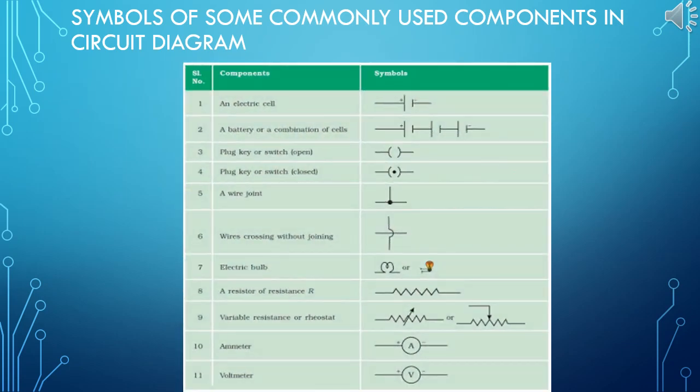It is often convenient to draw a schematic diagram in which different components of electric circuit are represented by symbols conveniently used. Conventional symbols used to represent some of the most commonly used electrical components are given in the below table. The first one, an electric cell which is known to people. You have learned in 7th class. Second one, a battery or a combination of cells. Third one, plug key or switch opened, represented with open bracket. Fourth one, plug key or switch closed. A dot inside the bracket represents closed key. Fifth one, a wire joint where a dot is representing joining of all the 3 wires. Sixth one, wire crossing without joining, and the symbol is given where there is no joint of wires.